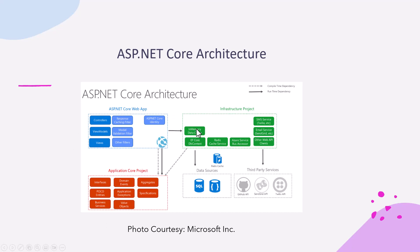The ASP.NET Core web app is also dependent on the infrastructure project, which in its own term is dependent on the data source and third-party services. The infrastructure project consists of the in-memory data cache, Entity Framework Core DB context, Redis cache service, Azure Service Bus accessor, SMS service, email service, and any other web API. This is the sort of ASP.NET Core architecture.